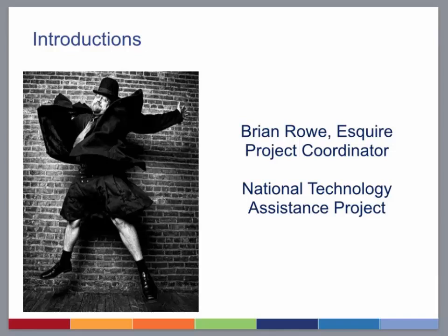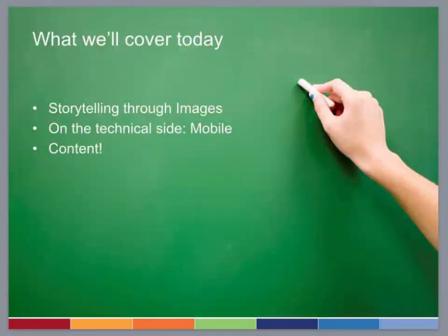First is Angela Tripp. She is the project manager of the Michigan Legal Help Program, which is Michigan's website and self-help center resources for people representing themselves in civil legal matters. She's been with legal services for 12 years and has been working exclusively on Michigan Legal Help for about the last four years.